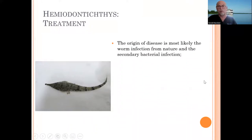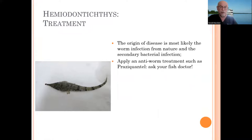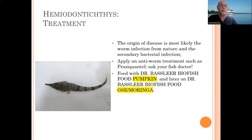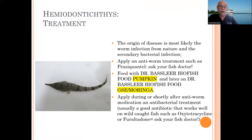So what can you do as a treatment for this hemiodontichthys? We have to understand it's a wild worm infection, and secondary bacterial infection occurs. You can try to treat with an anti-worm treatment — ask your fish doctor. Praziquantel is a practical one to use in this case. You can also help with fish food like pumpkin, which helps in the control of internal worm infections. It's not a medication, but it helps the fish to fight off the worms. After the 20-day pumpkin treatment course, you can start feeding with grapefruit seed extract and moringa, which helps the fish to repair during or after bacterial infection. You can also apply an antibacterial treatment — usually a good antibiotic for wild fish is oxytetracycline or furazolidone. Ask your fish doctor.